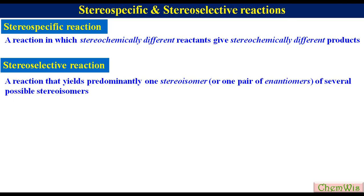This means if there are two or more than two possible stereoisomers of a product, in a stereoselective reaction we will predominantly get one stereoisomer or a pair of enantiomers. These things will be more clear if we go through the examples.